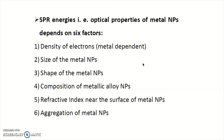Both absorption and scattering are happening in case of metal nanoparticles, and because of that the color of the nanoparticle becomes different. For a particular wavelength region, a localized surface plasmon resonance takes place, and because of that resonance, the metal shows color in that wavelength region.